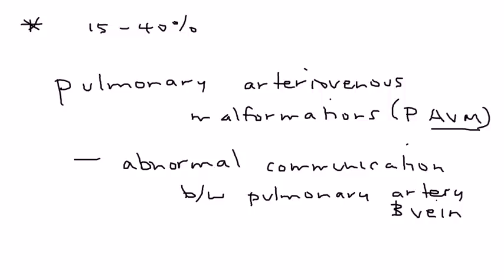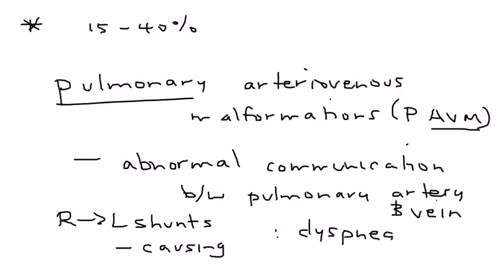When these pulmonary AVMs happen, they can cause a right-to-left shunt in the pulmonary circulation, and that can cause the symptomatology: difficulty breathing, fatigue, cyanosis. And it can also result in polycythemia, which is an increase in your red blood cell count.